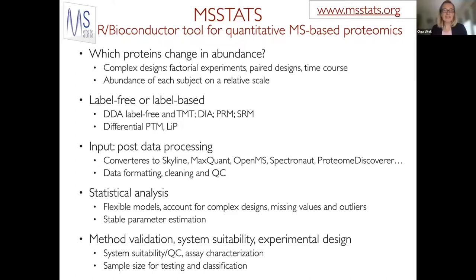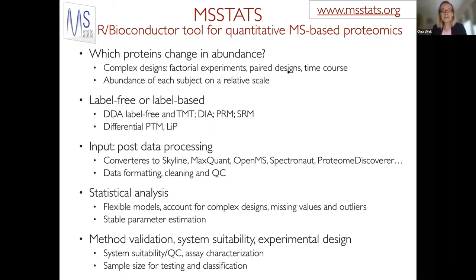We quickly realized that even though the question seems quite simple, from the statistical perspective it is actually not so easy. There is all kinds of complexity on the biological side. Beyond just healthy and disease, we can have factorial experiments with many factors, paired designs where we have a subject with healthy and tumor biopsy taken on the same subject, or temporal studies where we repeatedly collect measurements on the same person or cell line. This implies very different structure of variation and uncertainty.